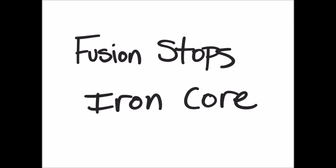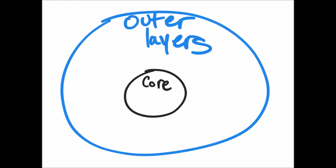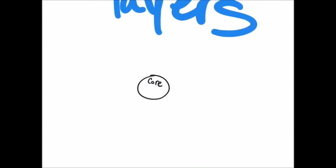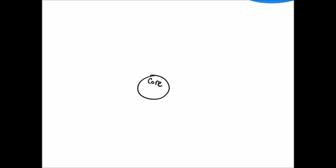The red supergiant will continue undergoing nuclear fusion until it has an iron core. Iron takes an incredible input of energy to produce — the red supergiant has to expend the energy it produces from fusing hydrogen to create the iron atoms. When the red supergiant has an iron core, it won't have enough energy left to continue fusion. Nuclear fusion will stop. The core of the star will collapse in less than a second, and the outer layers will explode. This explosion is called a supernova.